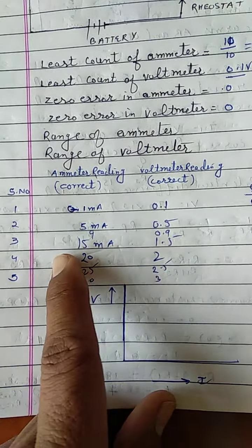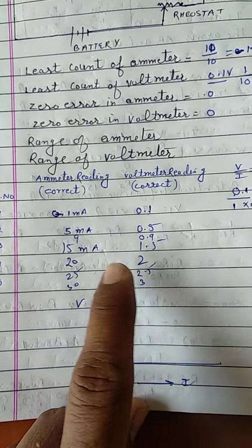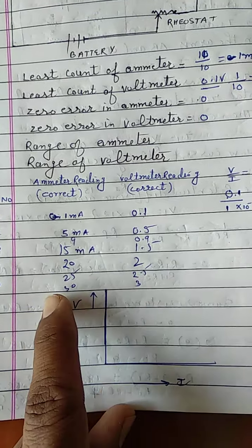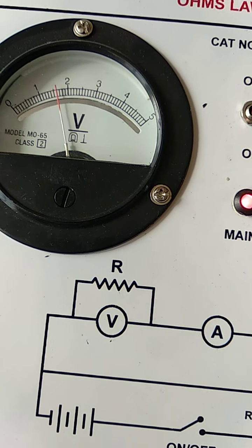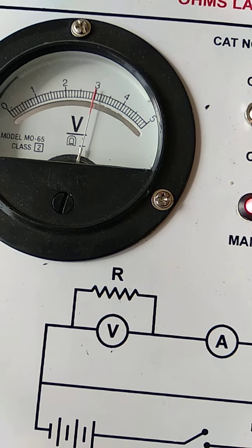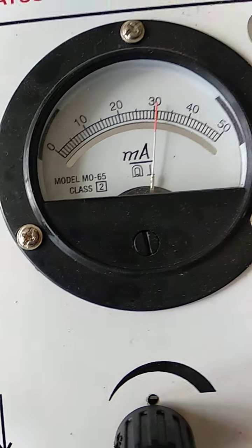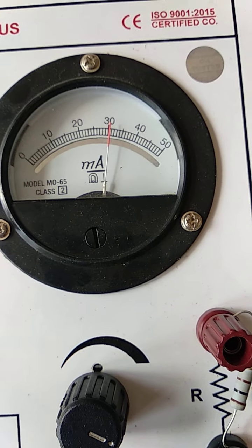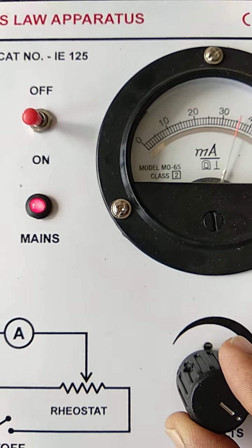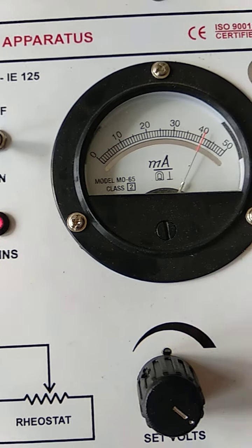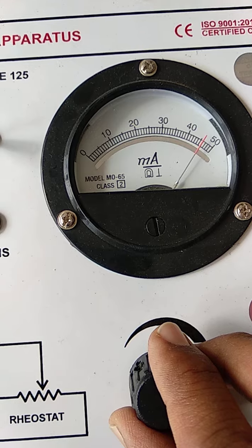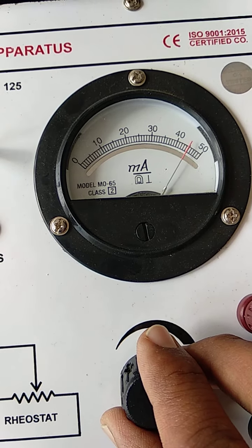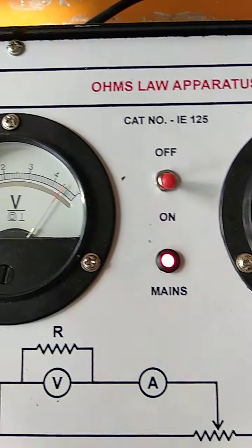1.5 is 15. 2 is 20 milliampere. 2.5 is 25. 3 is 30. You can see here. Suppose I am making it 3 volt. Here you can see it is 30. I am making it 4, it become 40. I am making it 4.5, it is 45.